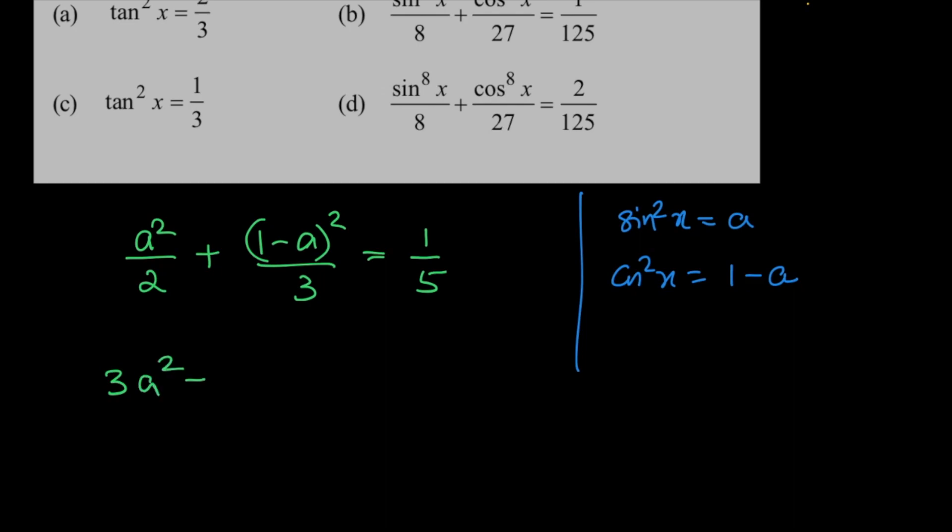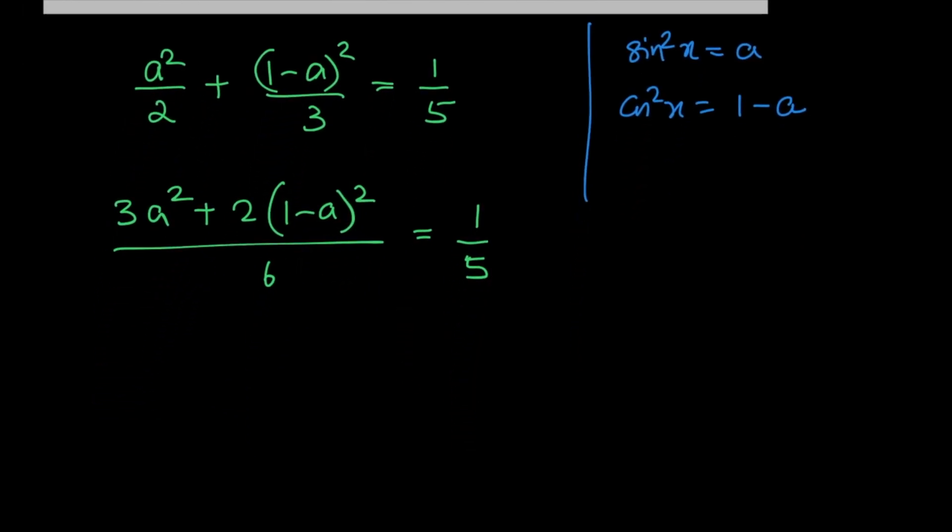So let's simplify this expression. We have 3a square plus 2 times 1 minus a whole square divided by 6 is equal to 1 by 5. So this is 3a square plus 2 into 1 minus 2a plus a square divided by 6 is equal to 1 by 5.